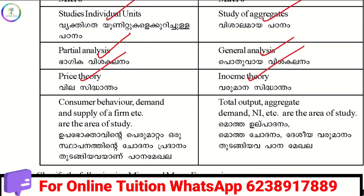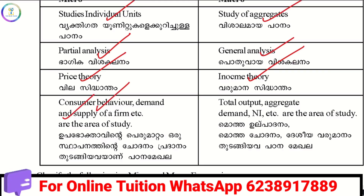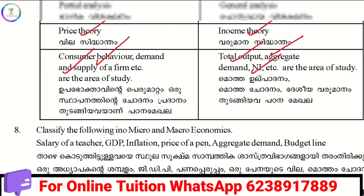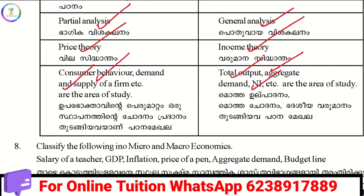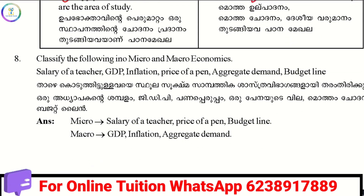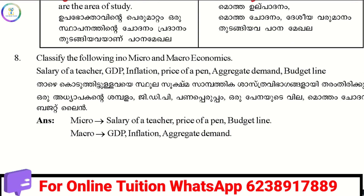What is studied in microeconomics? Consumer behavior, demand and supply of a firm — these are individual units, that is microeconomics. Macroeconomics covers total output, aggregate demand, and national income. For example, a teacher's salary is an individual unit — that is micro.